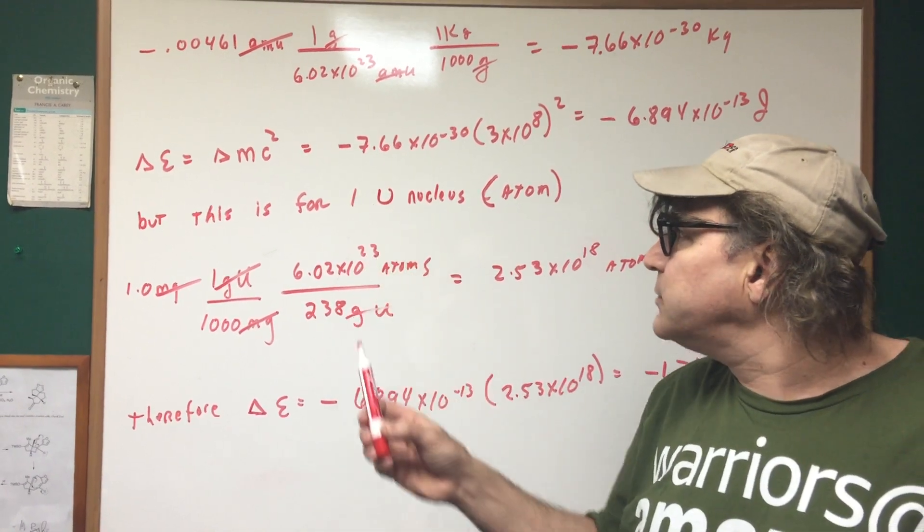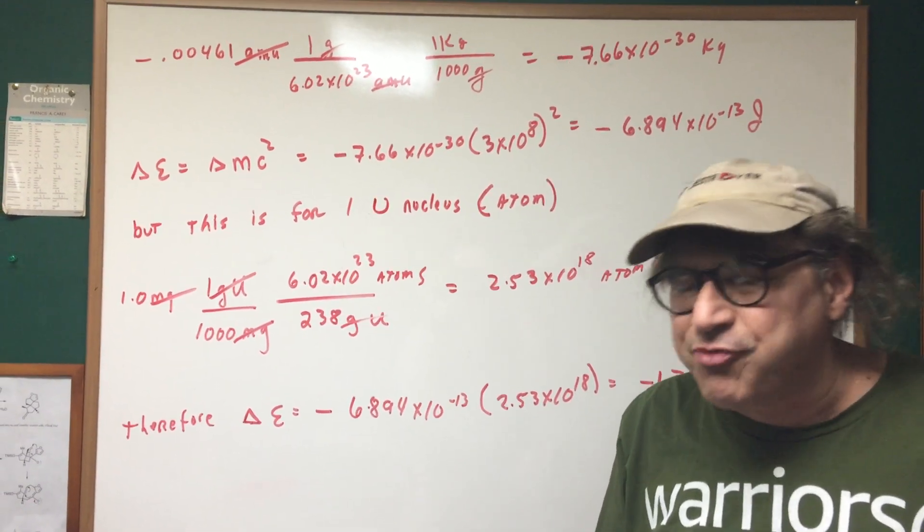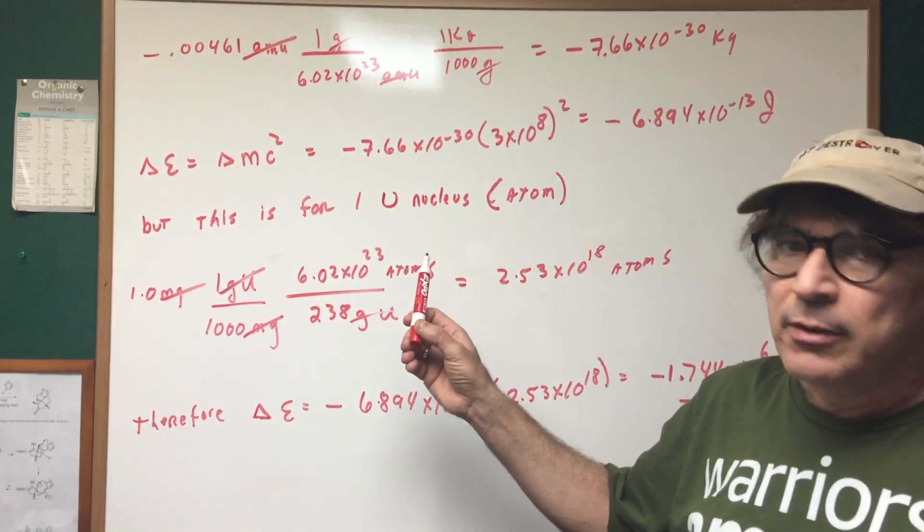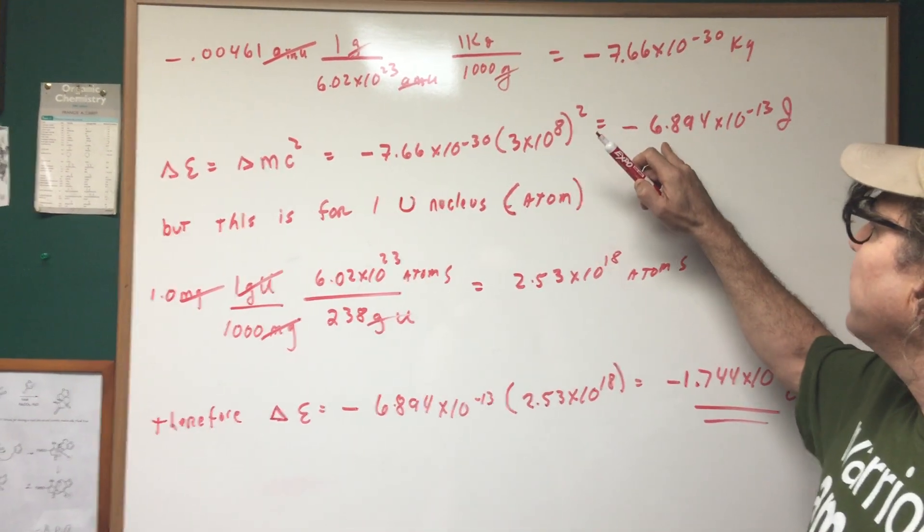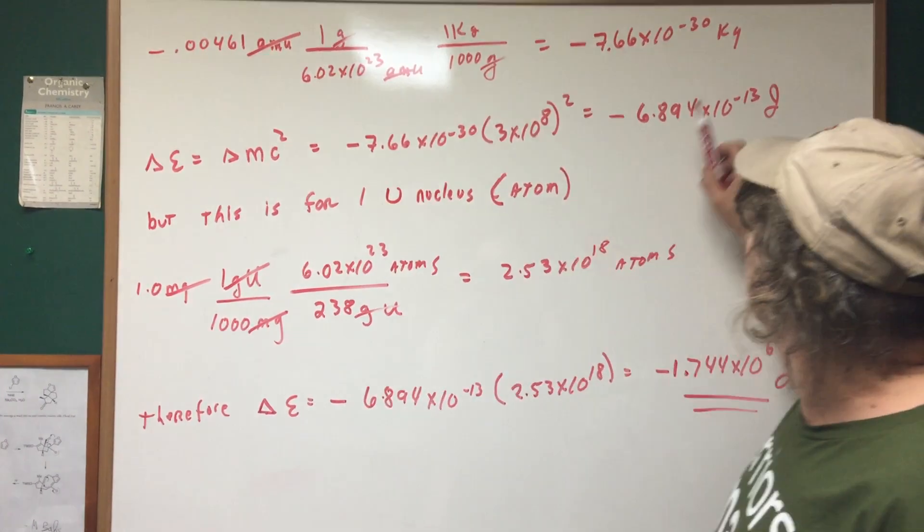Now, this represents the energy for one uranium nucleus. And that's where the trick, where this gets a little tricky. One nucleus means for one atom. So hold that thought. One nucleus of uranium gave off minus 6.894 to the minus 13th joules.